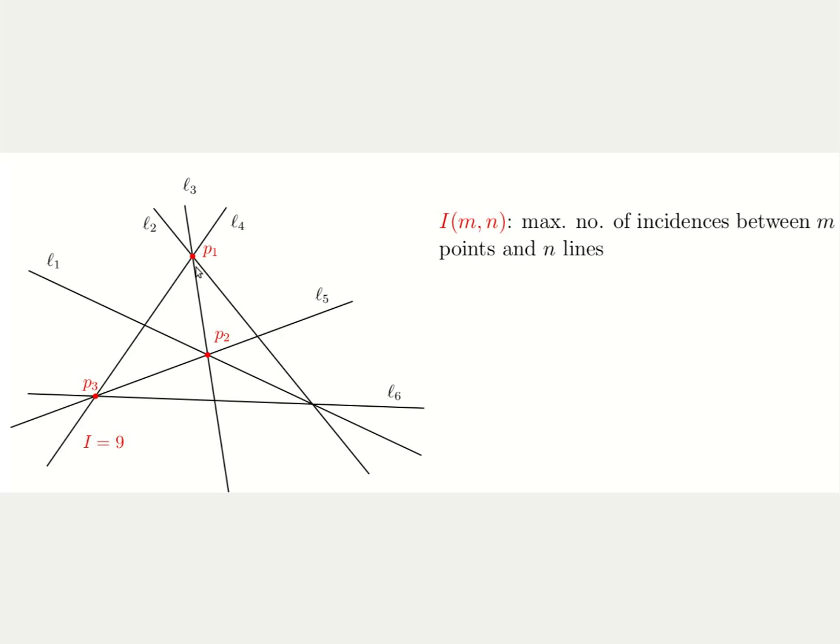For example, in this picture, the point p1 lies on three lines, so it counts three incidences. The same is true for the points p2 and p3. So in this picture, we can count nine incidences between these six lines and these three points.